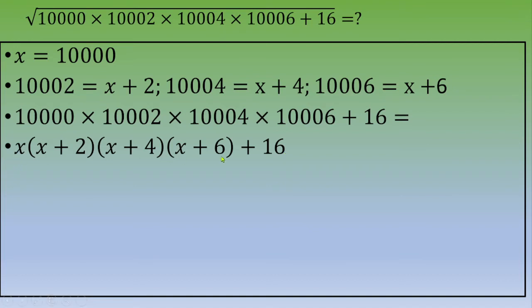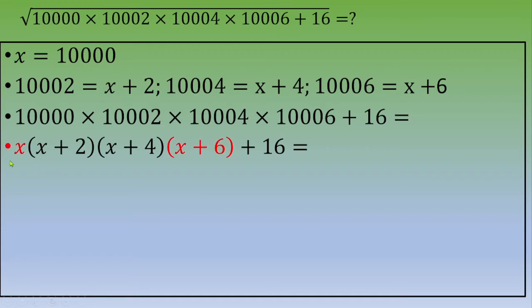To develop these four factors, we first multiply the first and fourth terms together: x × (x + 6). This gives x² + 6x.